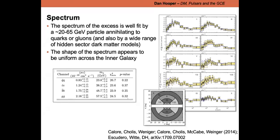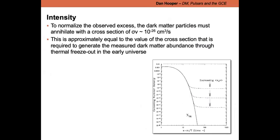Importantly, the spectral shape appears uniform across the inner galaxy. This disfavors cosmic-ray outburst models where inverse Compton scattering of high-energy electrons produces the signal — you'd expect electron cooling to cause spectral variation, which isn't observed. Whatever produces the signal has an approximately uniform spectral shape everywhere, as expected from dark matter annihilation. The overall intensity, if interpreted as dark matter annihilation products, favors an annihilation cross section within a factor of 2–3 of the canonical thermal relic prediction of 2×10⁻²⁶ cm³/s. This is either a remarkable coincidence or an indication we're looking at dark matter.